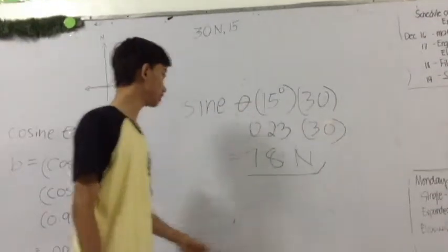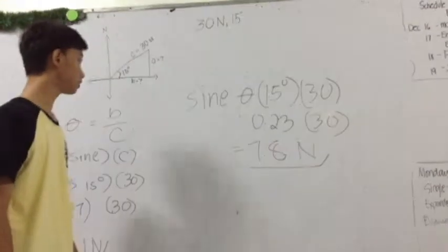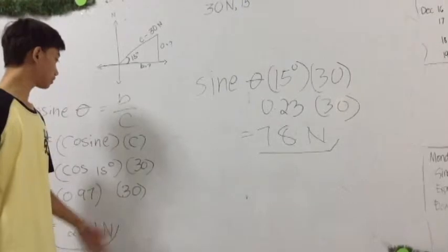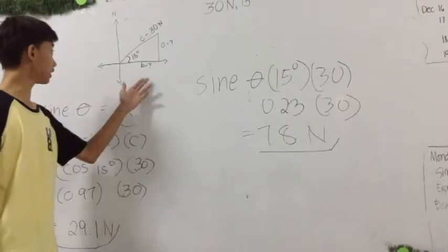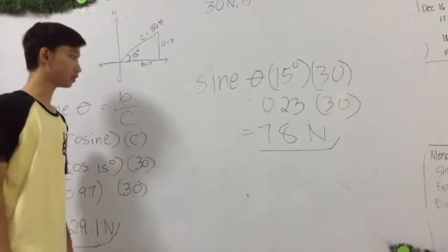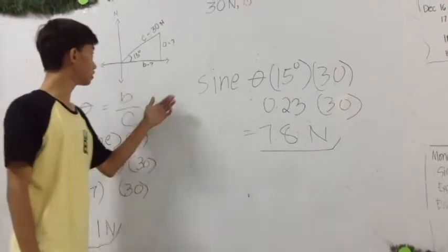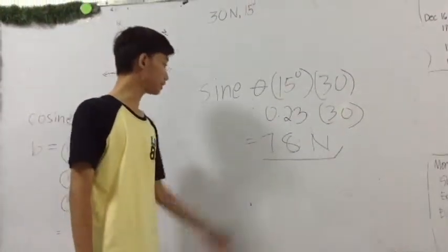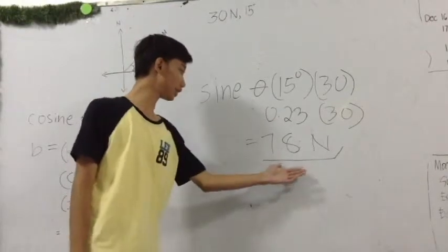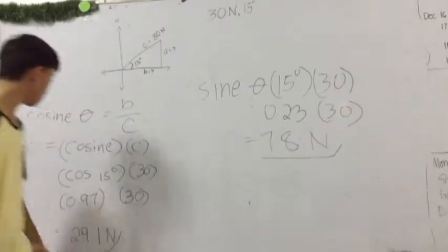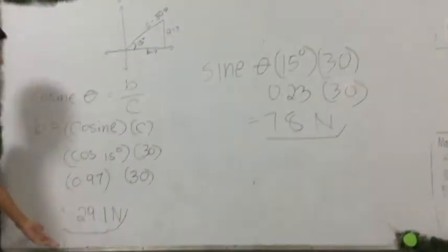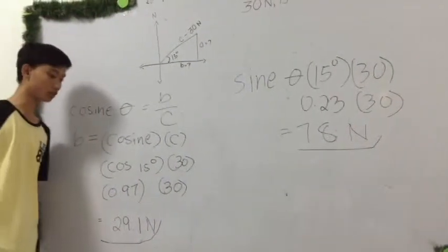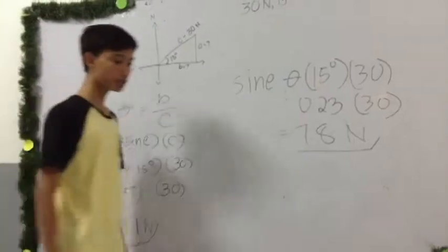As you can see, we have now found the values for A and B. The value for A is 7.8, while the value for B is 29.1. Now we're checking.